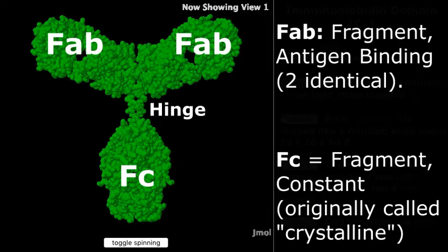The thin part between the three arms is called the hinge. Its flexibility allows the FAB arms to move around freely to accommodate different distances between antigen epitopes.